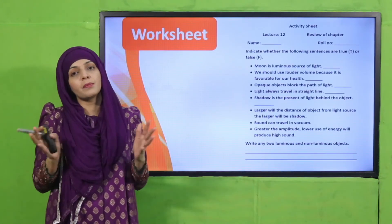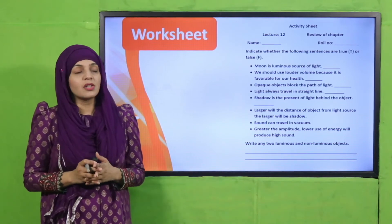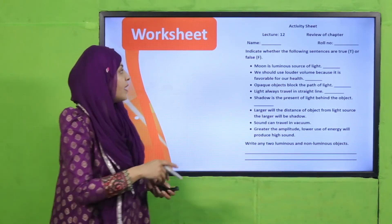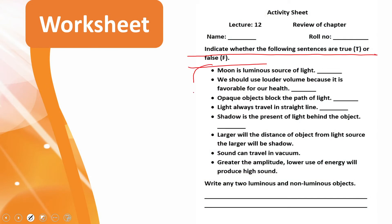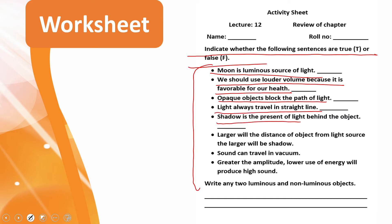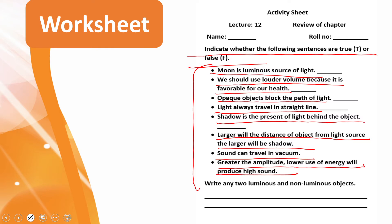Now it is time for practice. You can download this worksheet from the description box below the video, or get it in printed form from your teacher. Write down your name and roll number, then indicate whether the following sentences are true or false: Moon is a luminous source of light. We should use louder volume because it is favorable for our health. Opaque objects block the path of light. Light always travels in a straight line. Shadow is the presence of light behind the object. The larger the distance of the object from the light source, the larger will be the shadow. Sound can travel in vacuum. Greater the amplitude, lower use of energy will produce high sound.